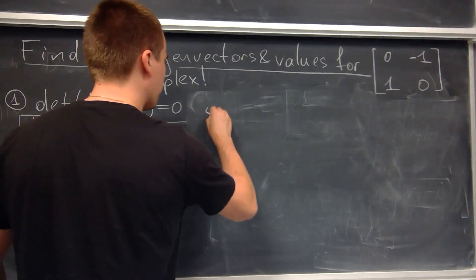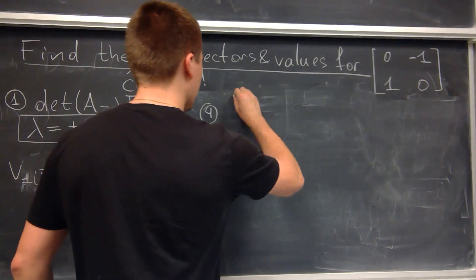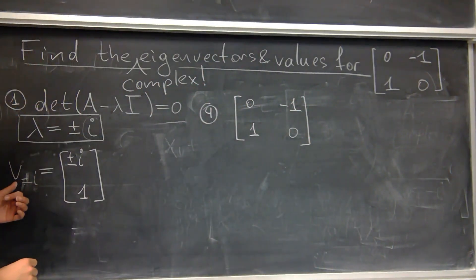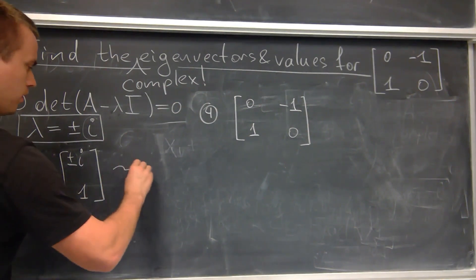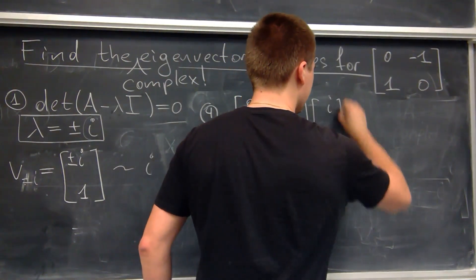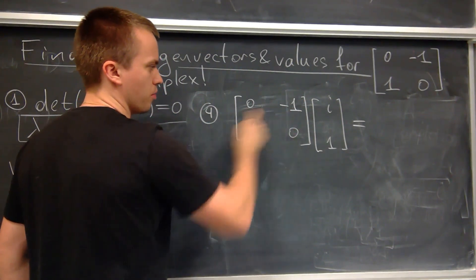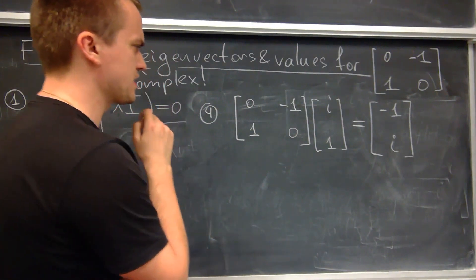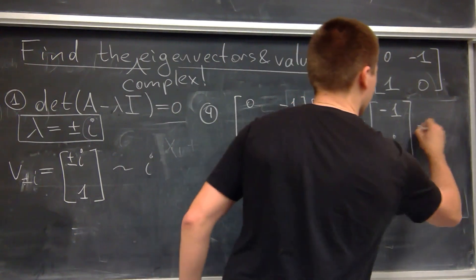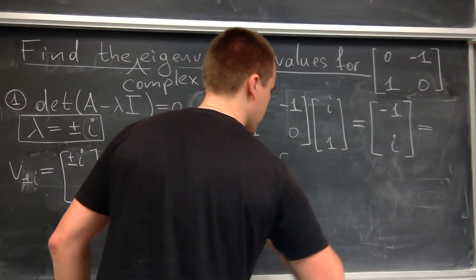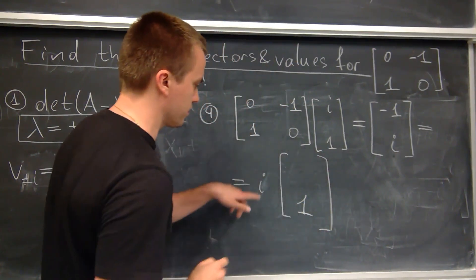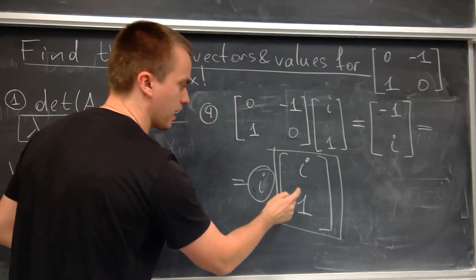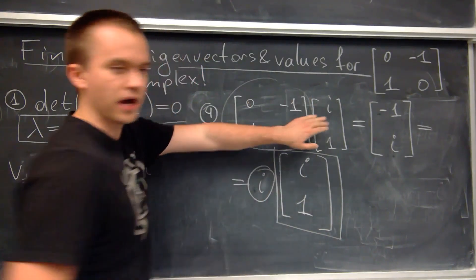For the last step, let's check our answer using one of the eigenvectors. My original matrix is 0, minus 1, 1, 0. Multiplying by the eigenvector i, 1, which corresponds to eigenvalue i: the first component gives 0 times i plus minus 1 times 1 equals minus 1, and the second component gives 1 times i equals i. Factoring out i from the result vector gives i times the vector i, 1 — which is exactly i times our eigenvector. This confirms the result. For every math problem, after you get your result, always check your answer.